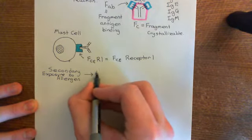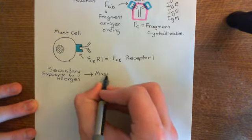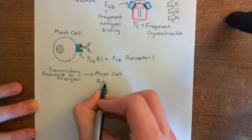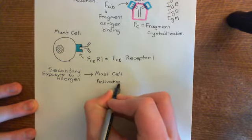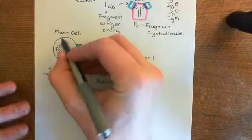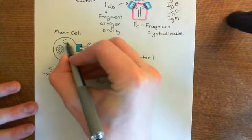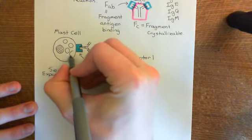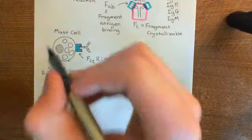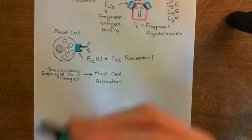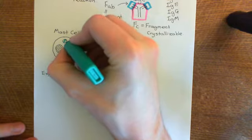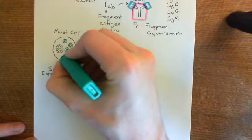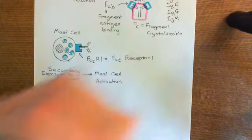So you're going to get mast cell activation. What do mast cells do when they become active? Mast cells have a huge number of granules within them — they have vesicles within their cytoplasm which are filled with histamine. These vesicles contain a lot of histamine molecules, stored in these mast cell granules.